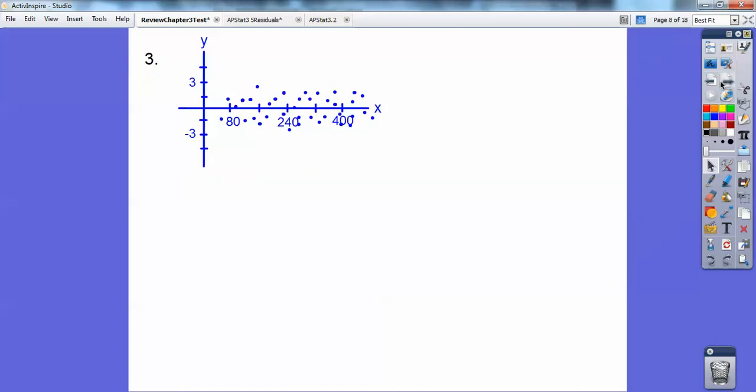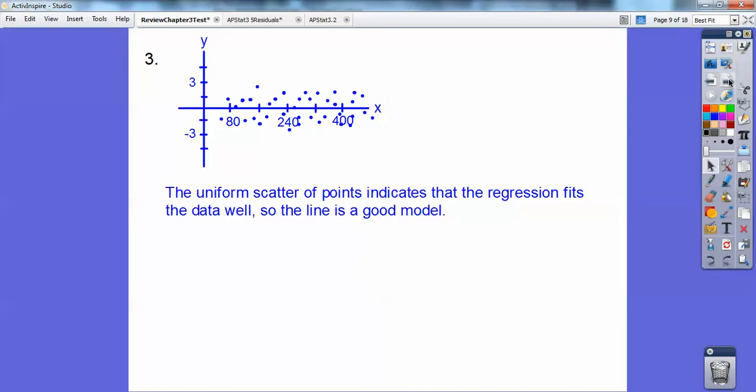This one right here, it's pretty uniform. It's pretty much the same all the way through. And if it keeps going all the way through, a linear model would be a great representation of this. So your least square regression line would be great on this one. It fits the data well. So a line would be a good model on this.